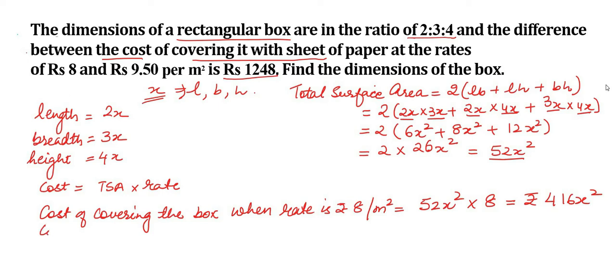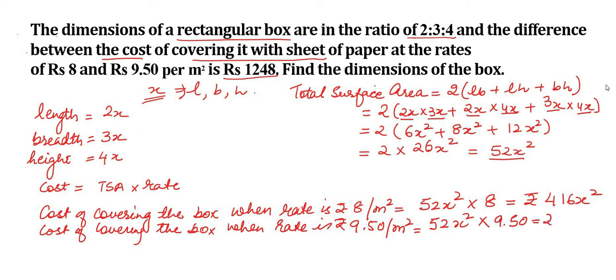Similarly, cost of covering the box when rate is rupees 9.50 per meter square is equal to area, that is 52x² multiplied by 9.50, equal to rupees 494x².